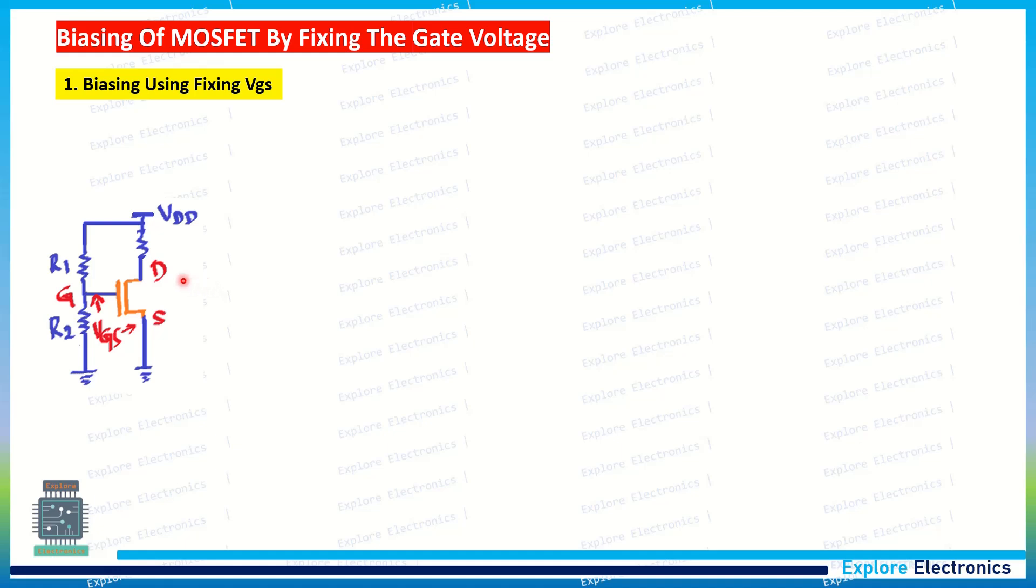In the saturation region, as we know, ID is constant and that ID will be dependent on the gate to source voltage. Here is the arrangement for the biasing for fixing VGS. How we can fix VGS means using a voltage divider circuit to the gate of the transistor to keep the gate voltage constant. Since source will be connected to ground, whatever the gate voltage we are going to provide, that will be the gate to source voltage.